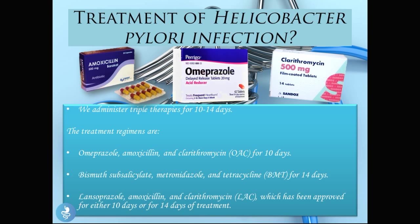So how is Helicobacter pylori treated? We usually administer triple therapies which last 10 to 14 days. There are three treatment regimens: omeprazole, amoxicillin, and clarithromycin for 10 days; bismuth subsalicylate, metronidazole, and tetracycline for 14 days; or lansoprazole, amoxicillin, and clarithromycin approved for either 10 or 14 days. These are the different treatment options available for eradication of the H. pylori infection.